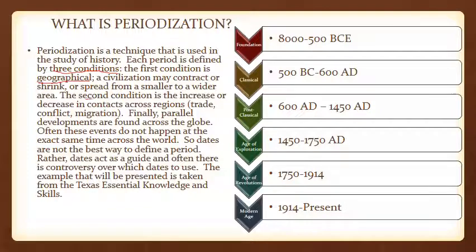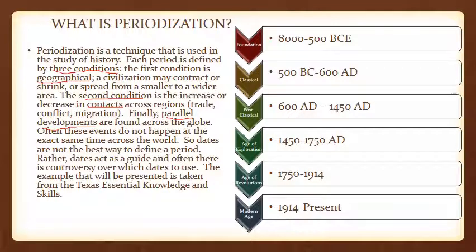The second condition is the increase or decrease in contact with other civilizations across regions, either through trade, conflict, or migration. And finally, parallel developments are found across the globe — things that happen at the same time. Often these events do not happen at exactly the same time, so dates are not the best way to define a period. Rather, dates act as a guide and are often the source of controversy over what dates to use.